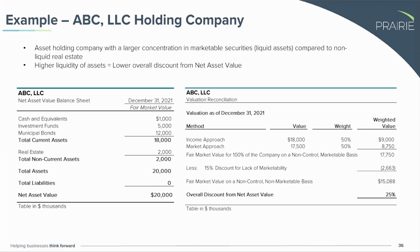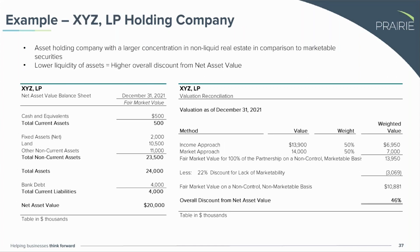We compute the fair market value on a non-control, non-marketable basis of about $15 million. Comparing that $15 million after-discount value to the $20 million net asset value, we arrive at an overall discount of 25% on our $20 million dollar fair market value of assets.